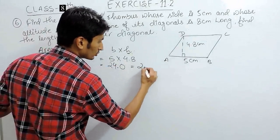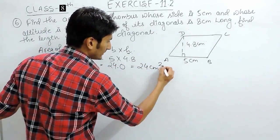There will be 1 decimal. So, the area should be 24 centimeter square.